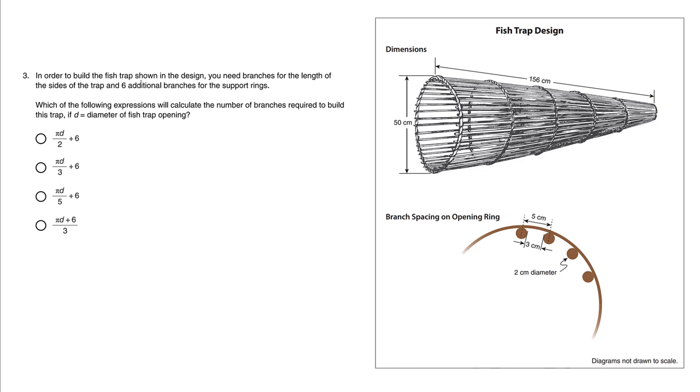In order to build the fish trap shown in the design, you need branches for the length of the sides of the trap and six additional branches for the support rings.